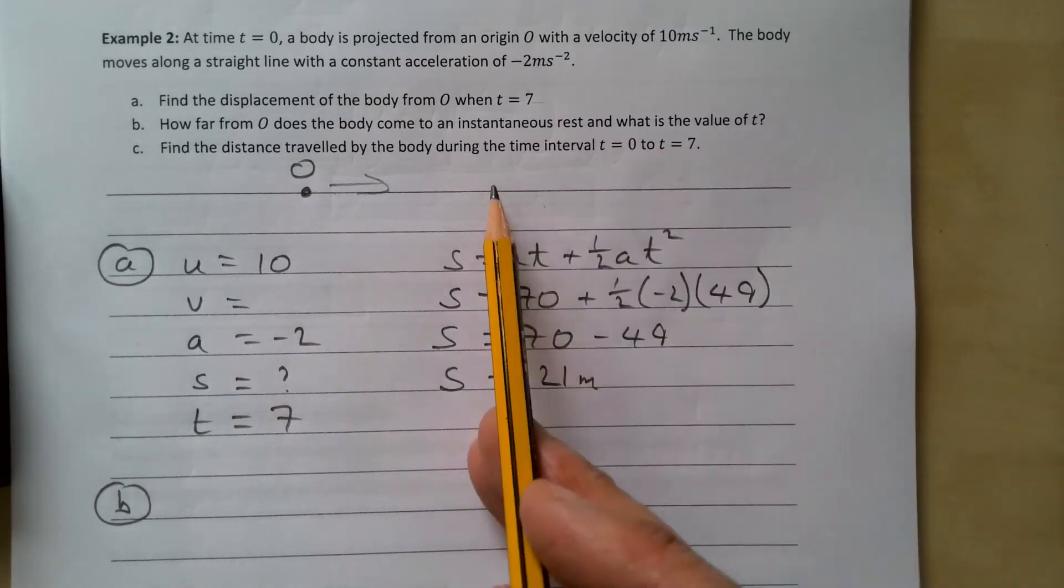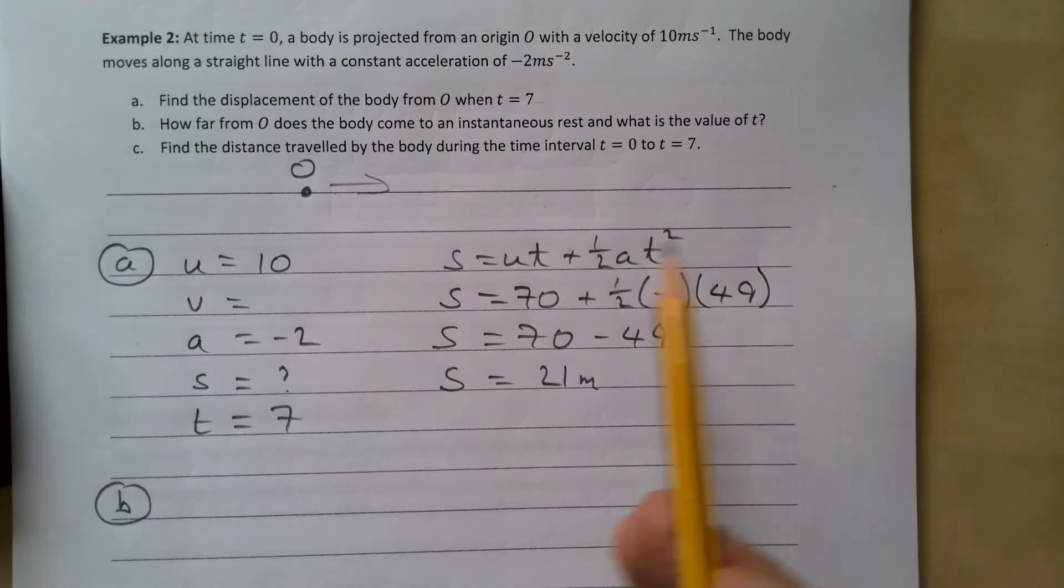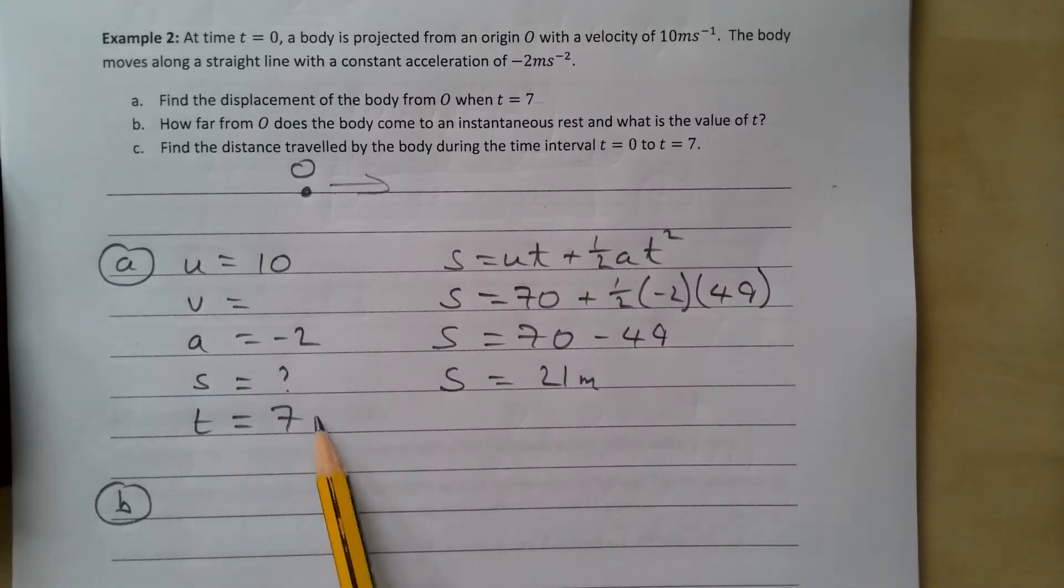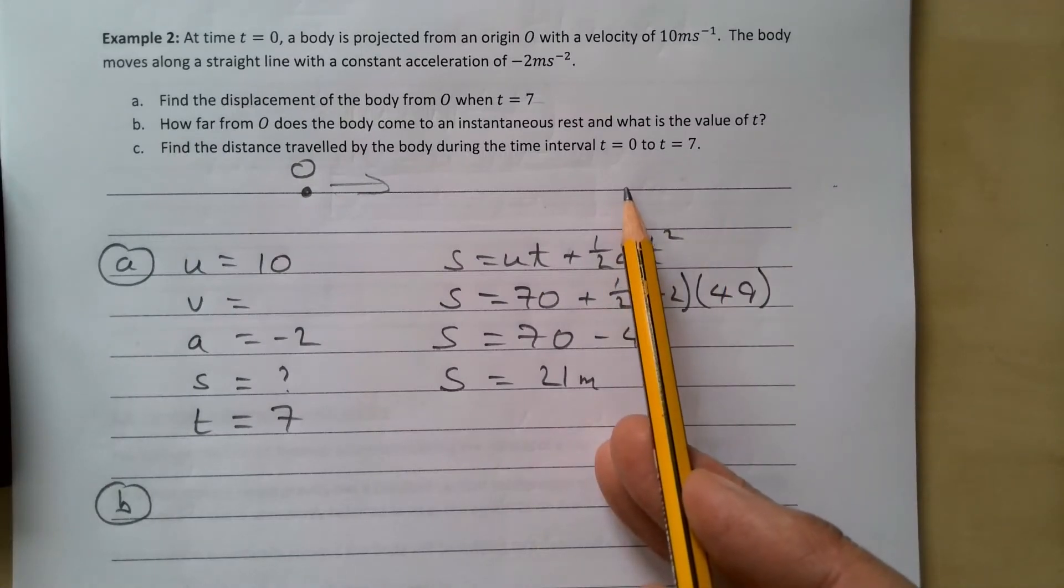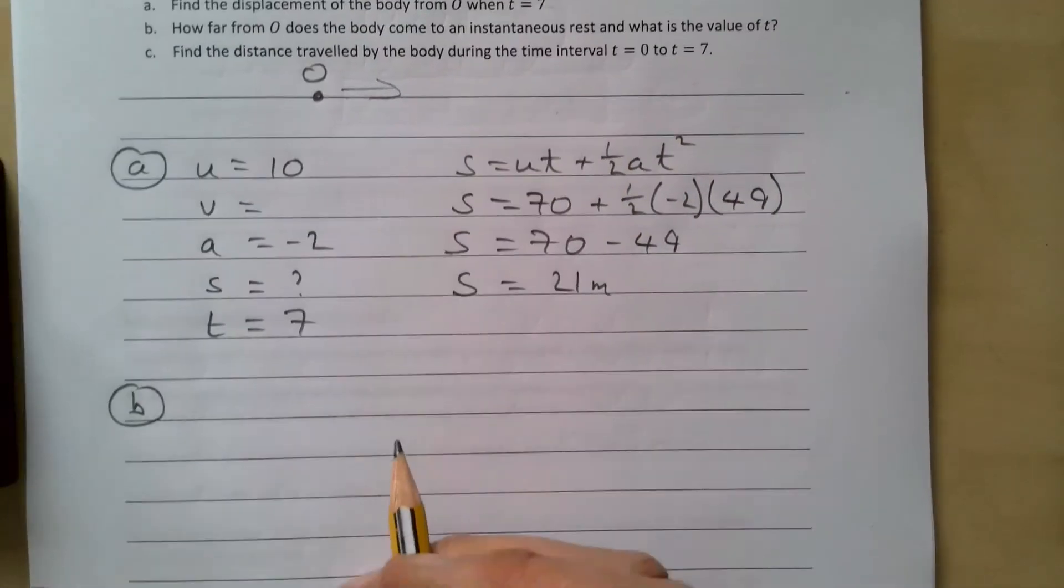And then it comes back that way. So we need to find that point there. Now this u vast is no good to us because this is a u vast that tells us where it comes out here and comes back to here. So we need to do a new u vast for this.